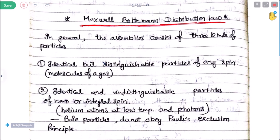Classically, in general, the assemblies which we will study in ensemble theory consist of three kinds of particles. Number one: identical but distinguishable particles of any spin — molecules of gas are identical but distinguishable. Number two: identical and indistinguishable particles that cannot be distinguished, with spin zero or integral spin — this category includes helium atoms at low temperature and photons.